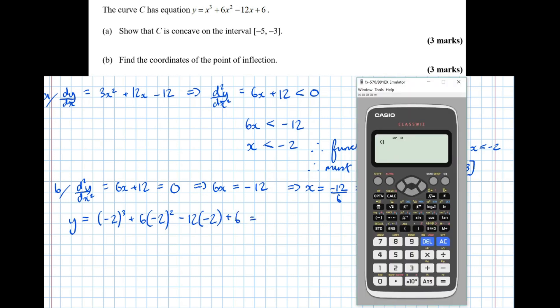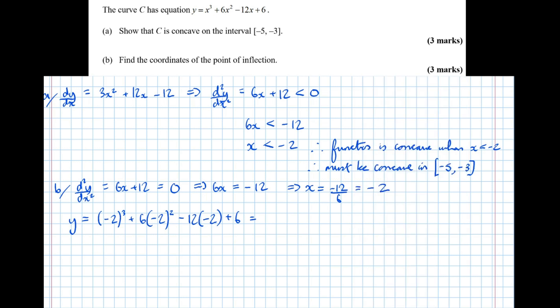So putting this in the calculator, minus 2 cubed, plus 6 lots of minus 2 squared, minus 12 lots of minus 2 squared, minus 12 lots of minus 2, plus 6, equals 46.